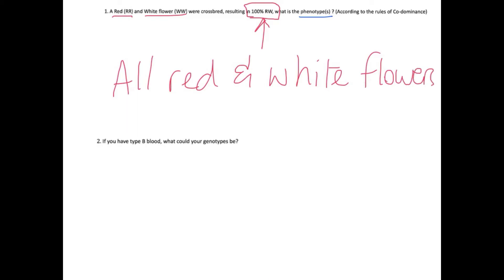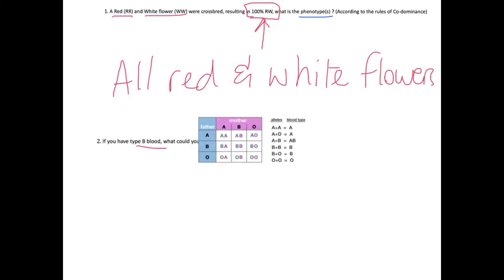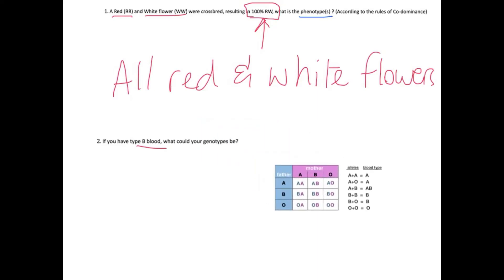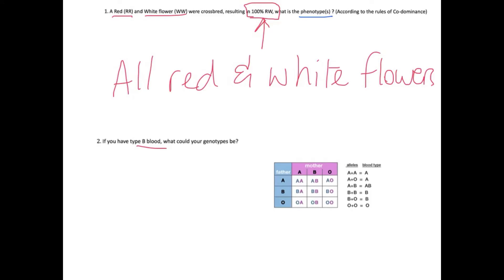Question two: if you have type B blood, what would your genotypes be? Referring back to the picture, individuals with blood type B can have one of two different genotypes. Their genotype could be BB — homozygous B — or it could be BO, since B is dominant over O.